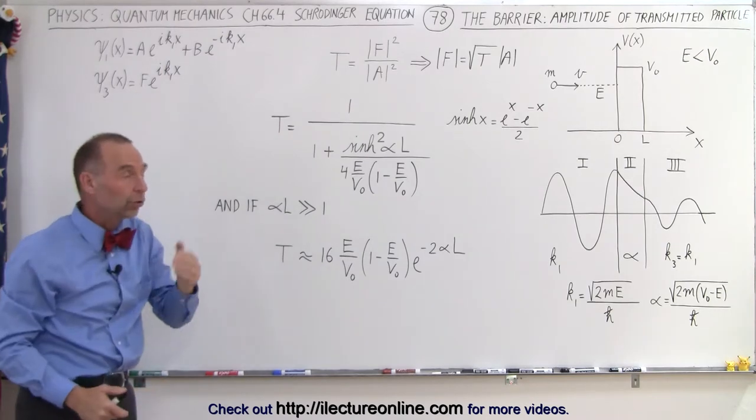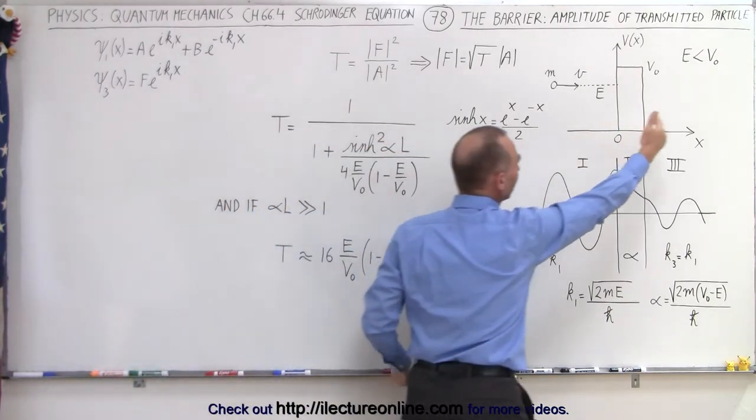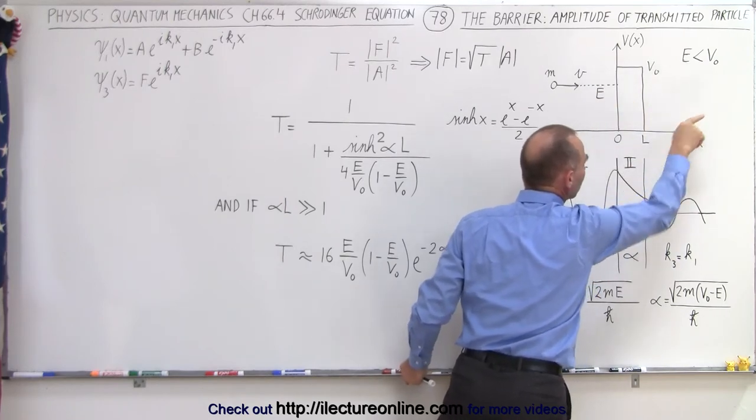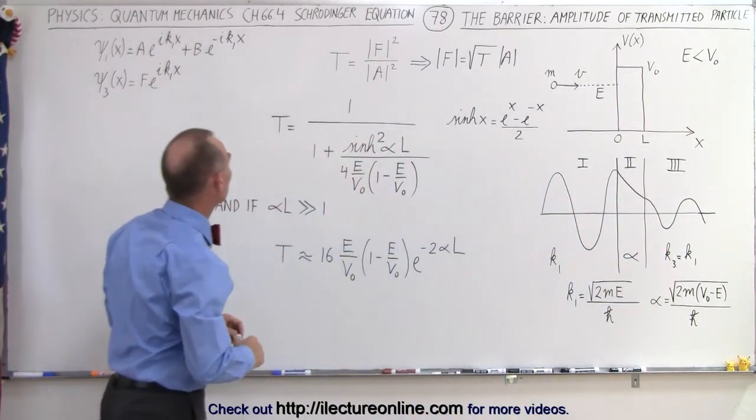And in region 3 there's only one term because there's nothing on the other side of the barrier to make the particles reflect. So particles, once they make it through the barrier, will only travel in one direction from left to right.